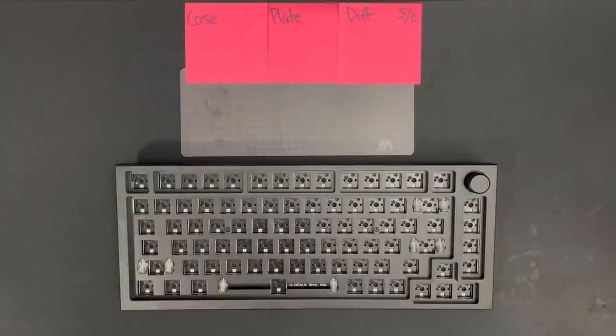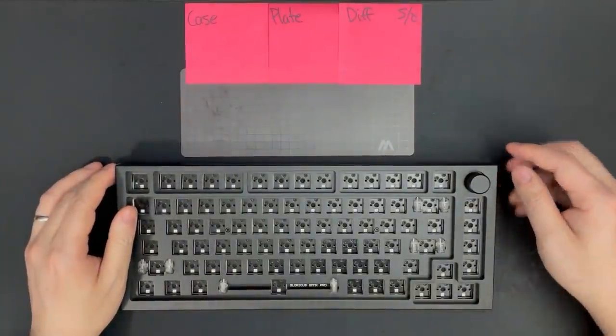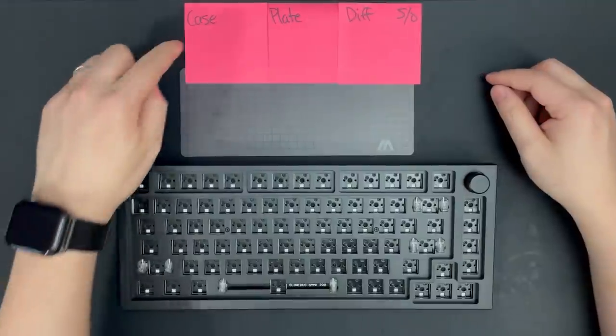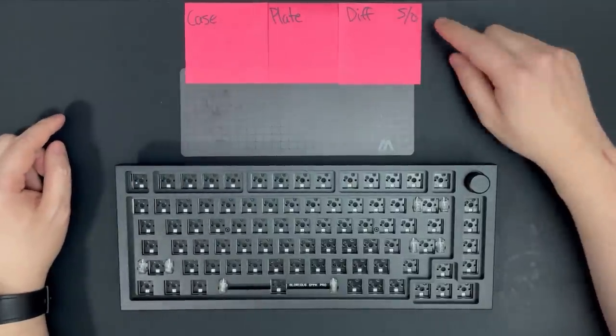Phew, five and a half minutes in and we're finally ready to disassemble the GMMK Pro. It's not too tough, but there are several different variants of screws, so I prepared some labels to keep track of everything. We can keep the screws separated into case screws, plate screws, diffuser screws, and standoff screws.